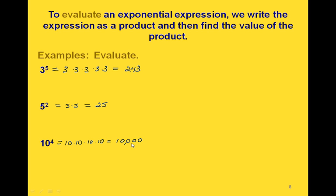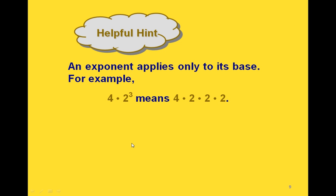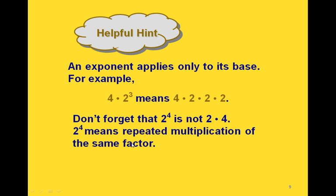Some things to watch out for with exponents: an exponent only applies to its base — the number just to the left of the exponent. So in two cubed, the three only applies to the two, not any other number. Also, two to the fourth is not the same as two times four — exponents and multiplication are different things. Two to the fourth equals 16, but two times four equals 8.